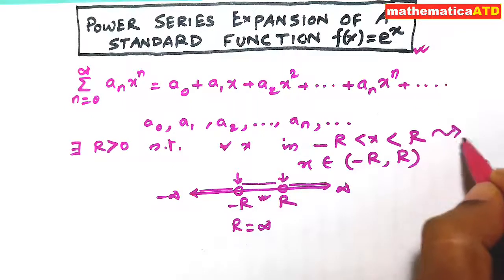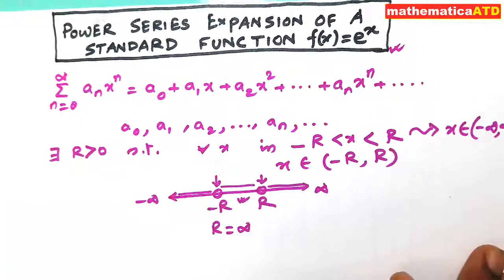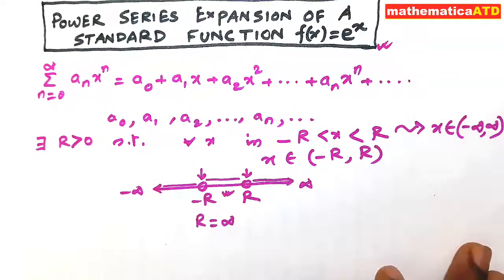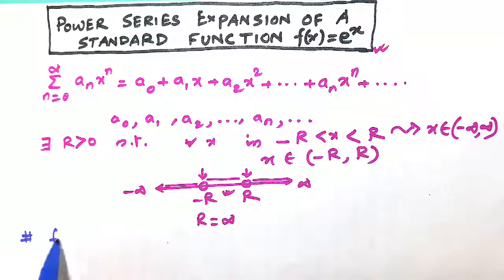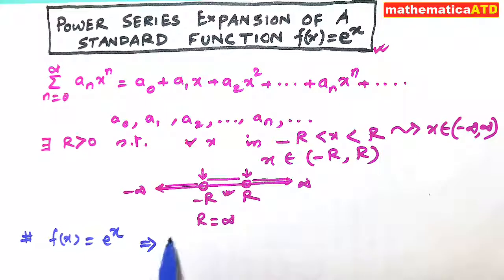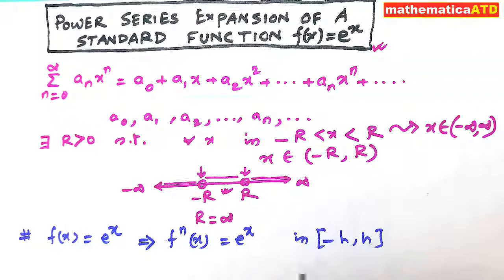When r = infinity, x belongs to (-∞, +∞). Now we shall learn the power series expansion of e^x. The function is f(x) = e^x. For every positive integer n, the nth derivative f^(n)(x) = e^x as well. Thus, f has derivatives of all orders in any interval (-h, +h), whatever positive real value h may be, so x belongs to (-h, h).